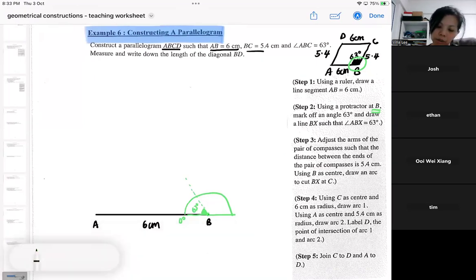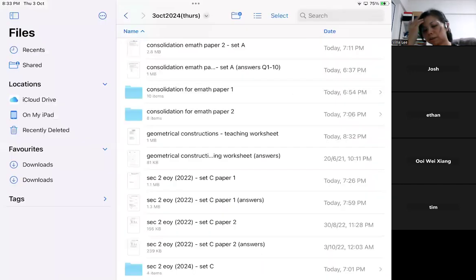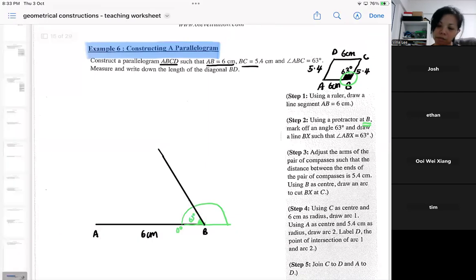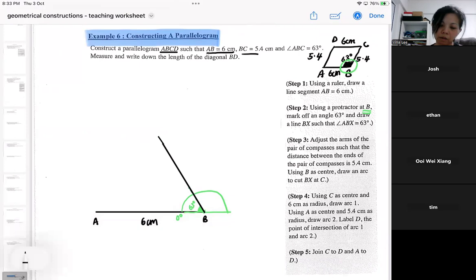So after the 63, you need to use your ruler. You need your ruler, draw a straight line. Your straight line has got to be in such a way that it's going to be 5.4. So you've got to put your ruler. So anyway, you use your ruler to measure. So you go and measure. Make sure that it is like 5.4. I just roughly put it here.